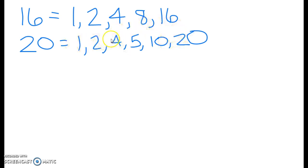We look for the highest number both sets have in common, which in this case happens to be 4. So the greatest common factor for 16 and 20 is the number 4.